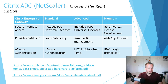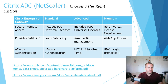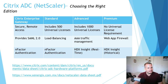Advanced also includes 1,000 universal licenses; Standard includes 500. These are used for traditional VPN capability — if you're using full-blown VPN rather than just a proxy connection, that consumes a universal license. With the Enterprise Gateway edition, I believe you have to purchase the universal licenses separately.